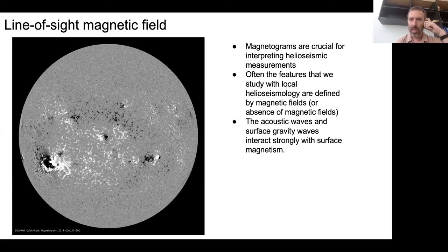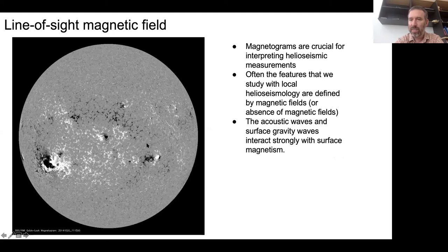A lot of the time, the things we're studying with local helioseismology are defined by the magnetic field - for example, sunspots or active regions - or sometimes defined by the absence of magnetic fields, for example when we want to study very quiet sun. An additional complication is that the acoustic waves and surface gravity waves used for local helioseismology are quite sensitive to the presence of surface magnetic fields. So when you're doing local helioseismology, you have to know what the magnetic field looks like.